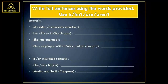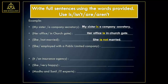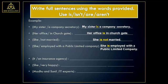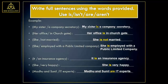Write full sentences using the words provided. Use is or isn't or are or aren't. Example: My sister — a company secretary. My sister is a company secretary. Her office — in Churchgate. Her office is in Churchgate. She — not married. She is not married. She — employed with a public limited company. She is employed with a public limited company. It — an insurance agency. It is an insurance agency. She — very happy. She is very happy. Madhu and Sunil — IT experts. Madhu and Sunil are IT experts.